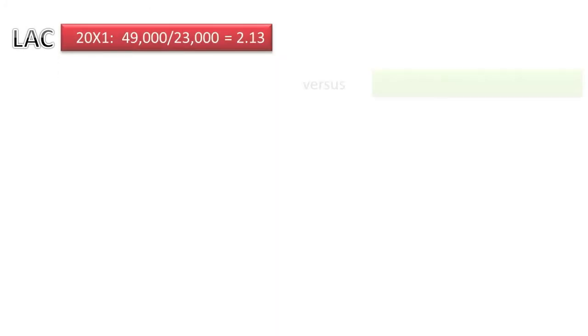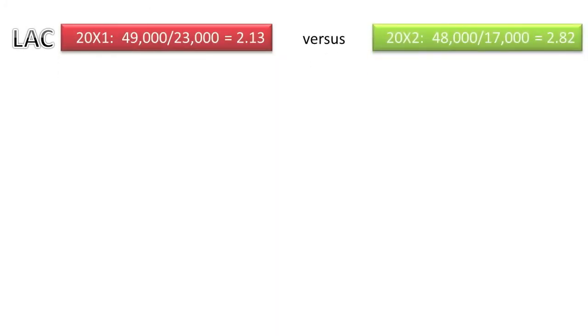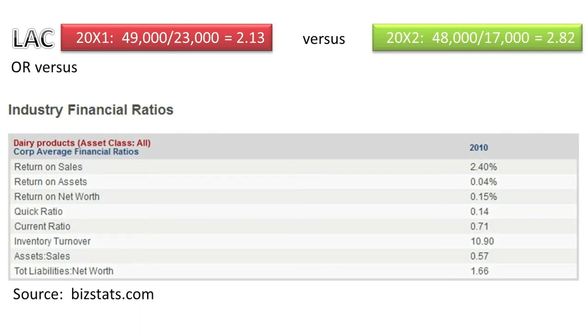Another caution about the current ratio and other ratios is that you should be careful not to evaluate a company's ratios in a vacuum. An analyst can gain better insights into a company's current ratio if it is compared to the same company's current ratio from the prior year, or if its current ratio is compared to other companies in the same industry for the same year. Various free websites exist that provide key ratios by form of organization and by industry.